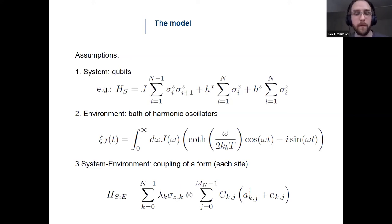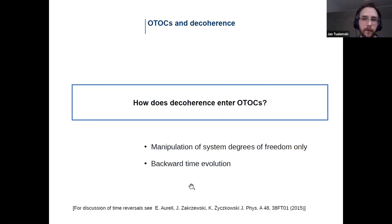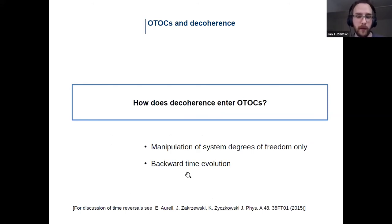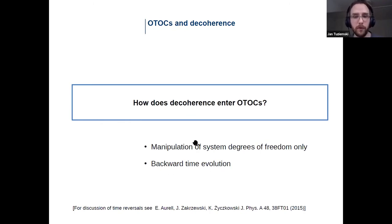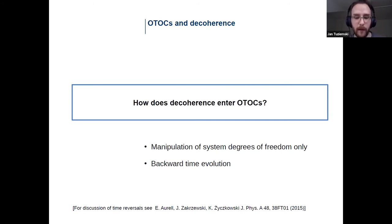The most important question now is to understand how decoherence enters expressions for out-of-time-ordered correlation functions. There are two factors to consider. Usually you attribute decoherence to not being able to monitor environmental degrees of freedom and only being able to manipulate system degrees of freedom. But in protocols measuring OTOCs there is also this backward time evolution, so you can ask: can I reverse the full evolution of the system and the environment, for example by flipping a magnetic field?